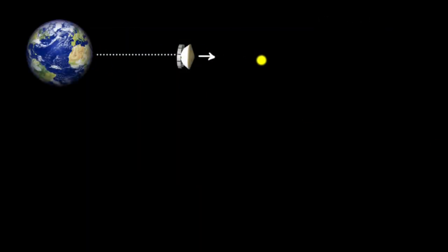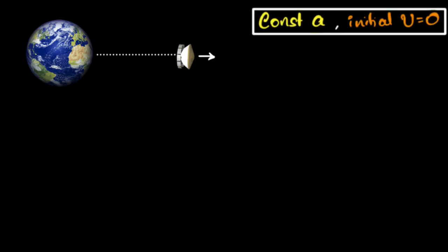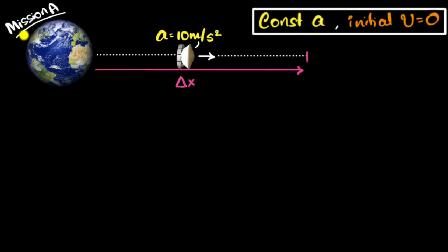In our case, we'll assume the spacecraft is traveling in a straight line with constant acceleration, and the initial velocity is zero. For mission A, the acceleration is 10 meters per second squared, which is very close to the acceleration due to gravity on Earth, so the astronauts would be feeling pretty much at home. The spacecraft will travel some distance — let's call it delta X — in some time.